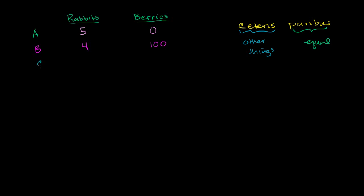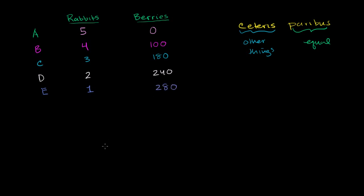Let's do some more scenarios assuming ceteris paribus. Scenario C: on average you have enough time to get three rabbits, and if you get three rabbits, you're able to get 180 berries. Scenario D: if you reduce the time spent getting rabbits to two rabbits, you now have enough time on average to get 240 berries. And scenario E: if you spend even less time hunting for rabbits — one rabbit on average — you have even more time for berries and can get 280 berries.